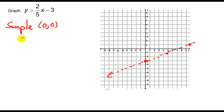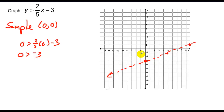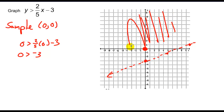So I plug in 0: is 0 greater than 2/5 times 0 minus 3? That gives negative 3. Is 0 greater than negative 3? Yes. So (0, 0) is an actual solution point. Therefore, every point in this region is a solution, and we shade the upper region of the graph.